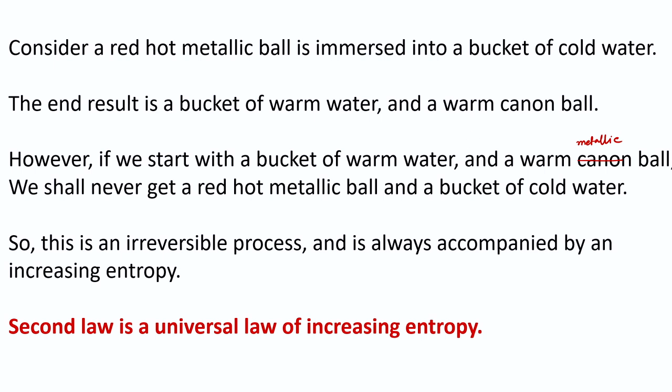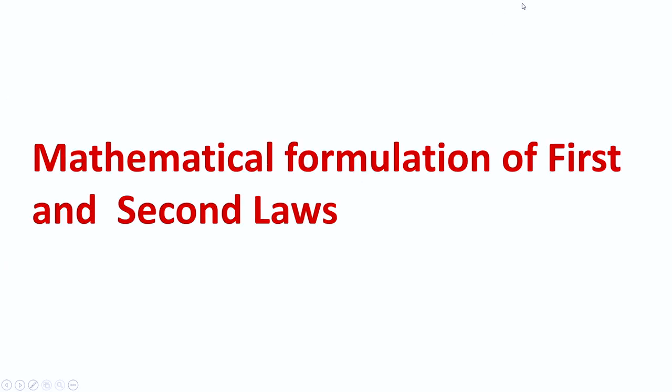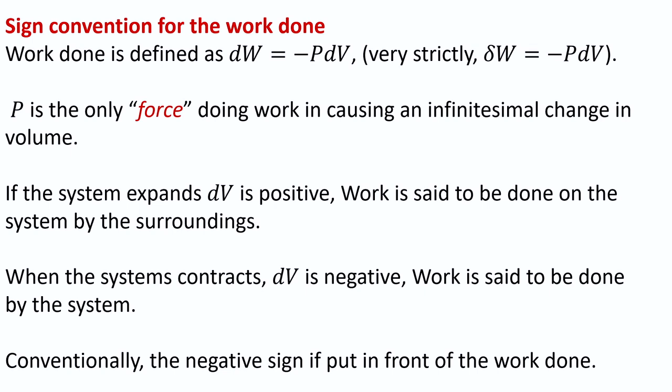The second law is a universal law of increasing entropy. Before the mathematical formulation, let us discuss the sign convention for work done, since the first law concerns work done. We write dW equals minus p dV. This minus sign is the source of debate. Strictly, dW is not a state function and should be written with delta, but we will note which quantities are and are not state functions. Internal energy is a state function — its change is independent of the path.